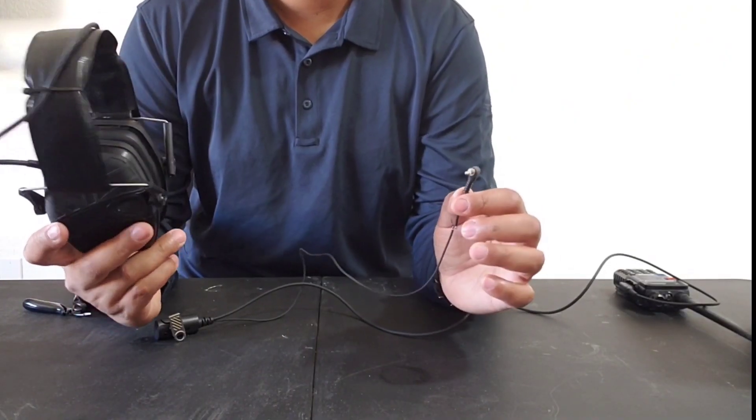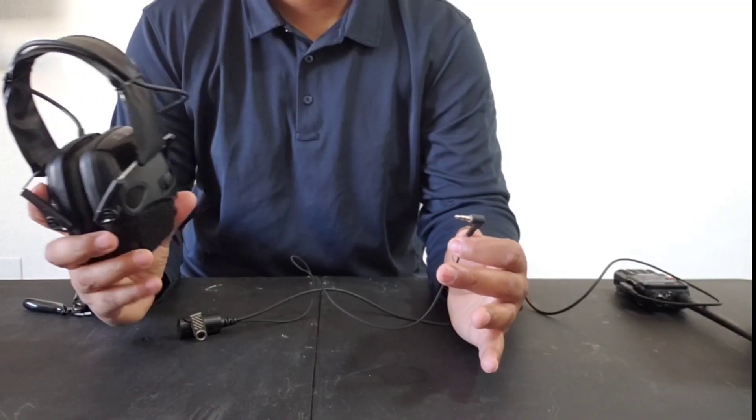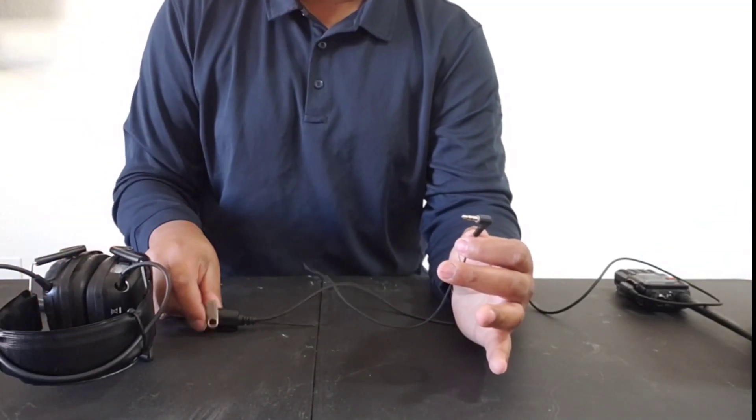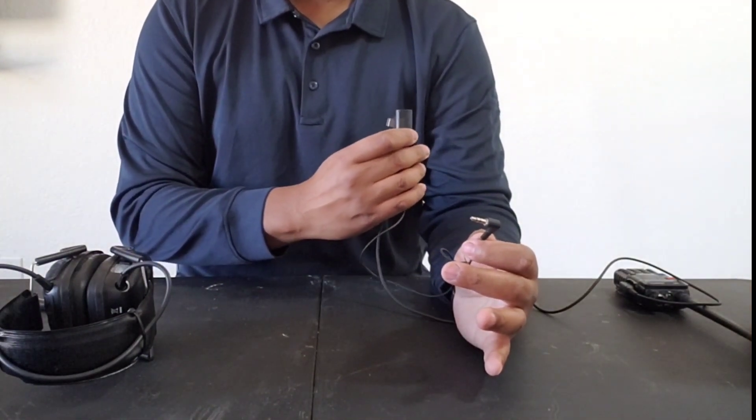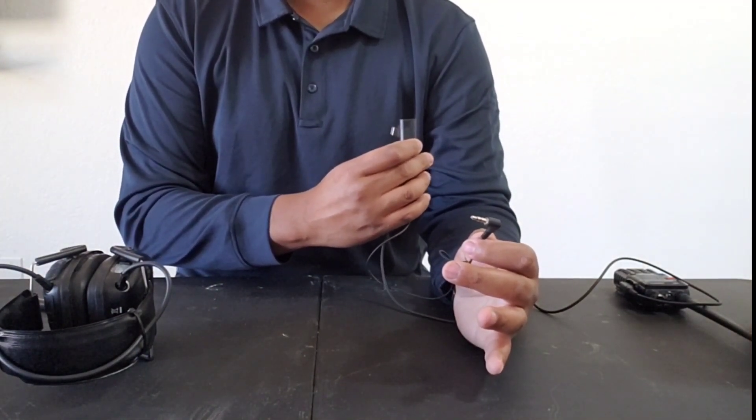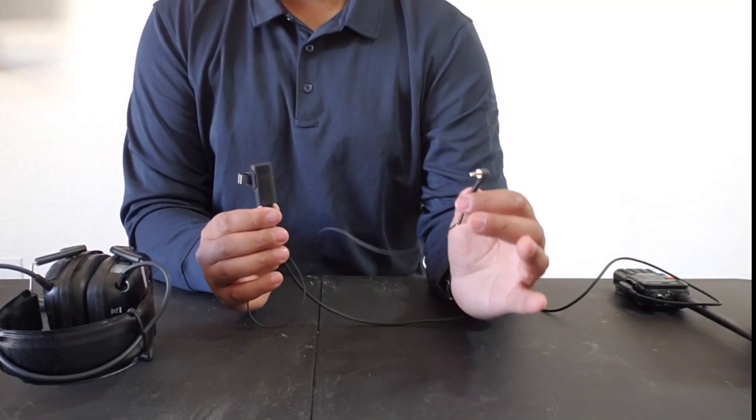All right. So the only thing that you really don't get with this setup is the cool guy boom mic that comes around in front of your mouth. But you don't really need that. Like I said before, as long as this is clipped up high on your plate carrier, you will be able to talk through it and your team will be able to hear you. That being said, this project is basically done.